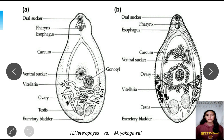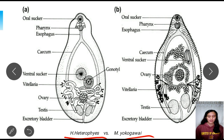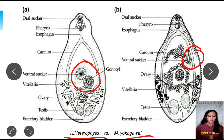Here we see the difference between the morphology of the adult worm of heterophaeids and Metagonimus yokogawai. In Metagonimus yokogawai, the gonotyl and ventral sucker are fused together; however, in heterophaeids they are not fused. Also, the reproductive structures of heterophaeids are seen sub-medially, while the ovary of Metagonimus yokogawai can be seen medially.